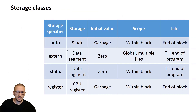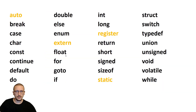So this is the example of extern. You use this keyword to indicate that your variable is declared and initialized in another file. With this lesson we have covered the auto keyword, extern, register, and static.